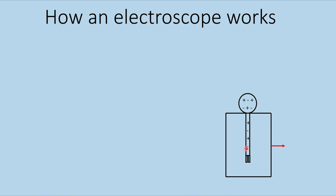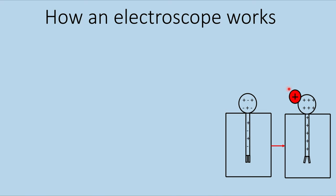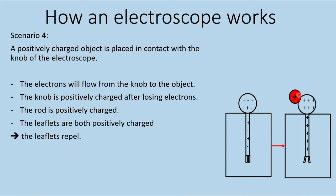Another case: we place the positively charged object in direct contact with the knob of a neutral electroscope. We expect electrons to go from the electroscope to the positively charged object, since electrons transfer from the object richer in electrons to the one with fewer. The whole electroscope loses electrons and becomes positively charged; the leaflets are positively charged and repel.